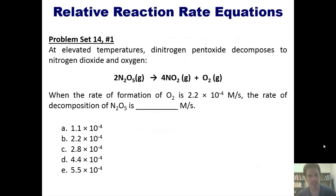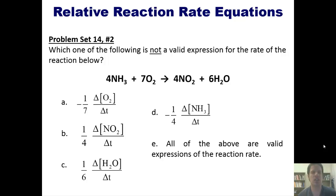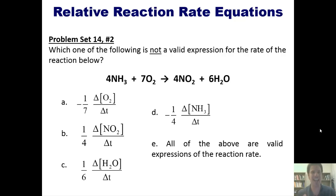Here's a problem: at elevated temperatures, dinitrogen pentoxide decomposes to nitrogen dioxide and oxygen. When the rate of formation of O₂ is 2.2 times 10 to the negative 4 molars per second, what is the rate of decomposition of N₂O₅? You're welcome to pause and try it yourself; I'll post a link to a separate video where I solve it. Here's another problem: which of the following is not a valid expression for the rate of the reaction shown? I'll post a link to a video answering that as well. Please stay tuned for the next lecture video, which continues with reaction rate laws and chemical kinetics. Until then, have an enjoyable rest of your day.